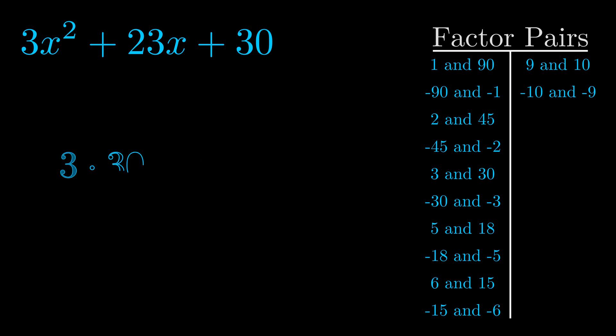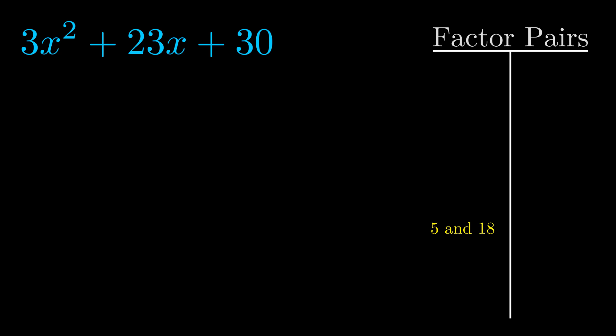That's the middle term, the one that we haven't done anything with yet. And really this is the only factor pair that we need. Now once we have this factor pair, we want to use it to split up the b value.